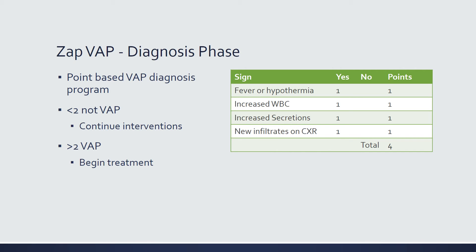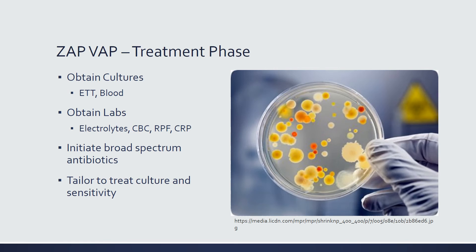The diagnosis phase uses a clinical severity symptoms scoring system. Patients are evaluated once a day for fever, hypothermia, increased white blood cells, increased secretions, or new infiltrates on chest x-ray. A score below two means continuing current interventions; a score over two likely enrolls the patient in the treatment phase. For treatment, you obtain cultures from the endotracheal tube and blood, collect lab work including electrolytes, CBC, RFP, and CRP, initiate broad-spectrum antibiotics early, and tailor treatment once culture sensitivities return.